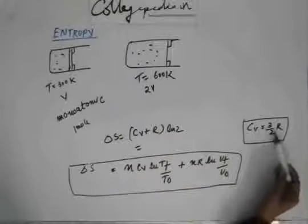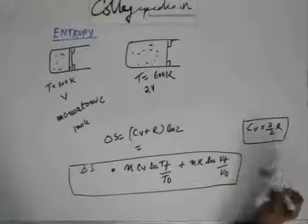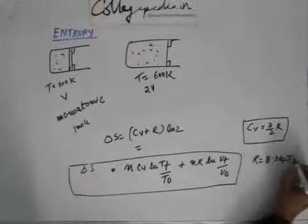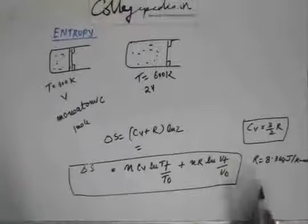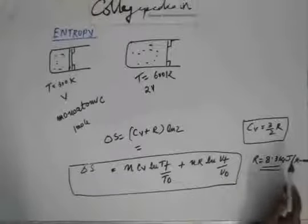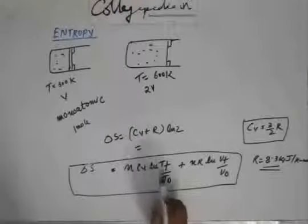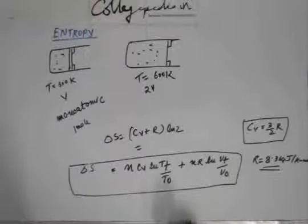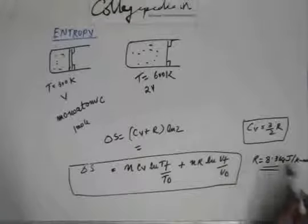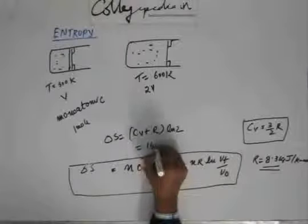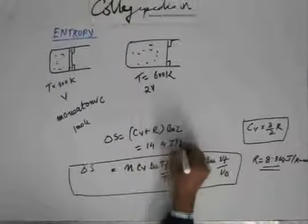With Cv = 3/2 R, we have Cv + R = 5/2 R. The value of R is 8.314 J/(K·mol). The unit of entropy is J/K, and when you multiply by n in moles, the moles cancel to give J/K. Putting in the values, the answer comes out to 14.4 J/K.